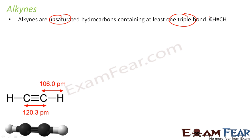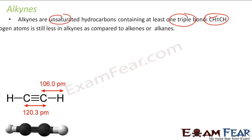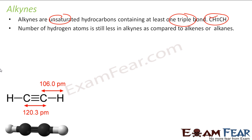For example, this is ethine — the smallest alkyne. The structure of ethine has a triple bond, and the C-H bond length is 106 pm and the C-C bond length is 120 pm.